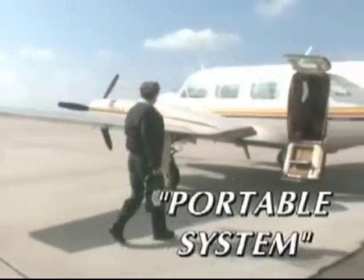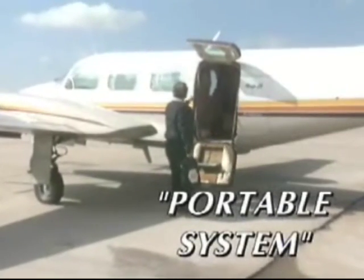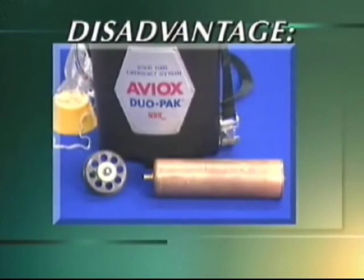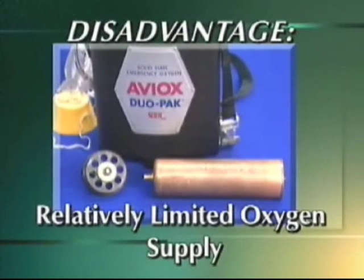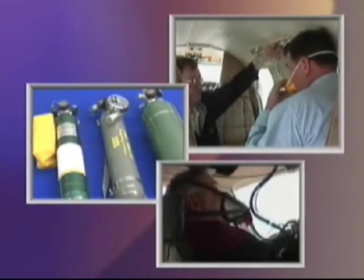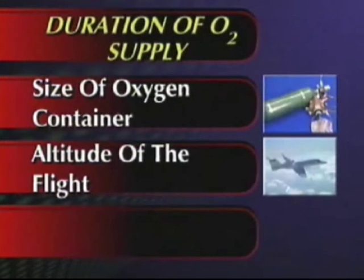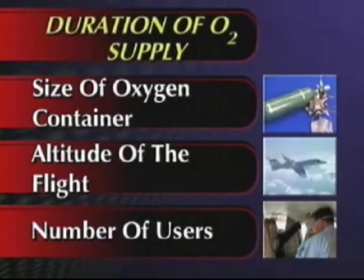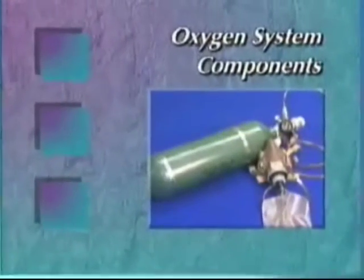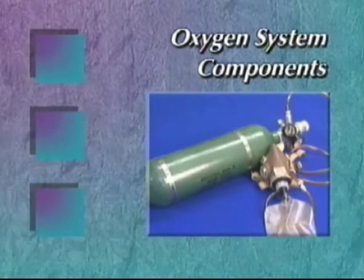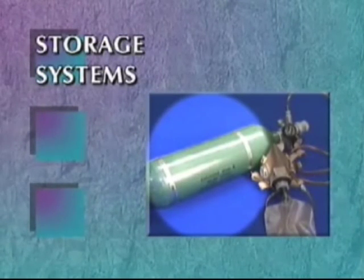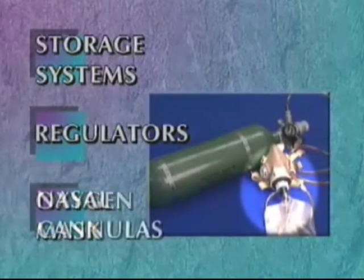A portable oxygen system is a self-contained unit that can be taken on and off the aircraft, designed especially for short-duration flights at altitudes above 10,000 feet mean sea level. One disadvantage of portable oxygen equipment is its relatively limited oxygen supply. Regardless of the type of system used, duration of oxygen supply depends on the size of the oxygen container, the altitude of the flight, and the number of people using the system. Most oxygen systems, portable or fixed, have three components: storage, regulators, and oxygen masks or nasal cannulas.